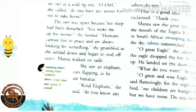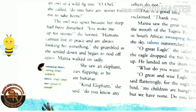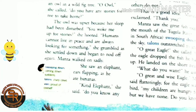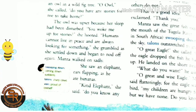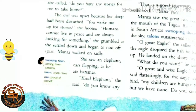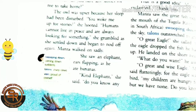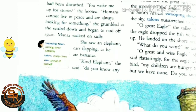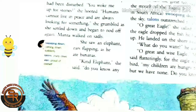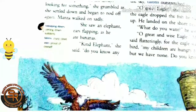Startled by the sound of Manza's call, the eagle dropped the fish he had picked up and landed on the shore. 'What do you want?' he asked. 'Oh great and wise eagle,' Manza said flatteringly, 'my children are hungry for stories but we have none. Do you know any?'